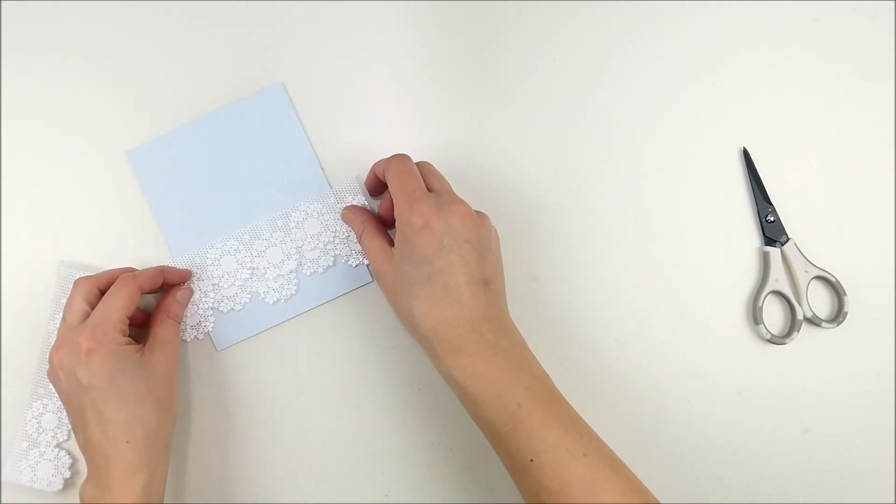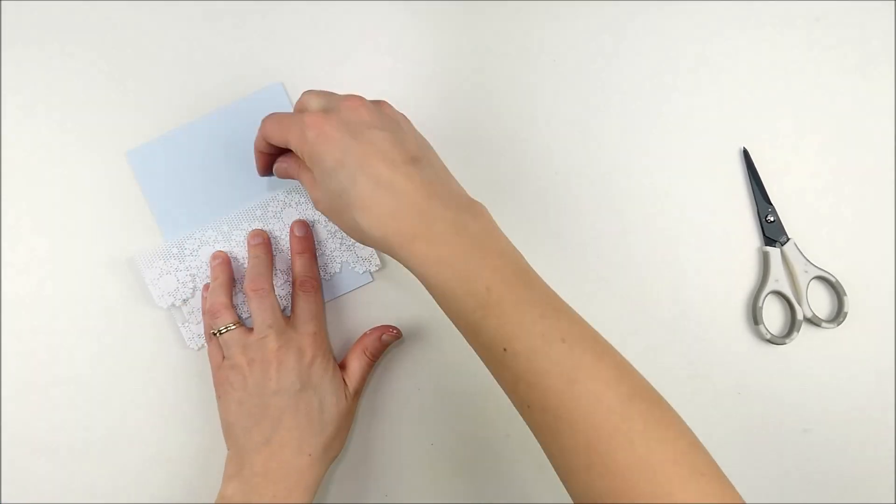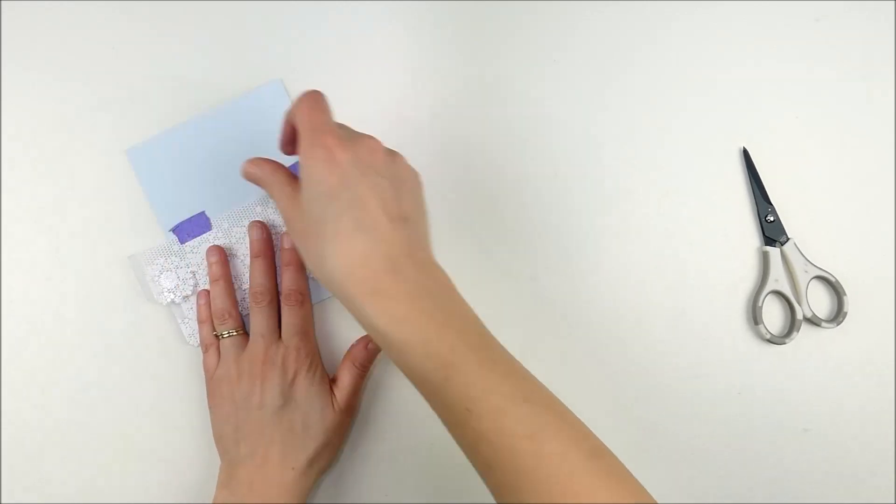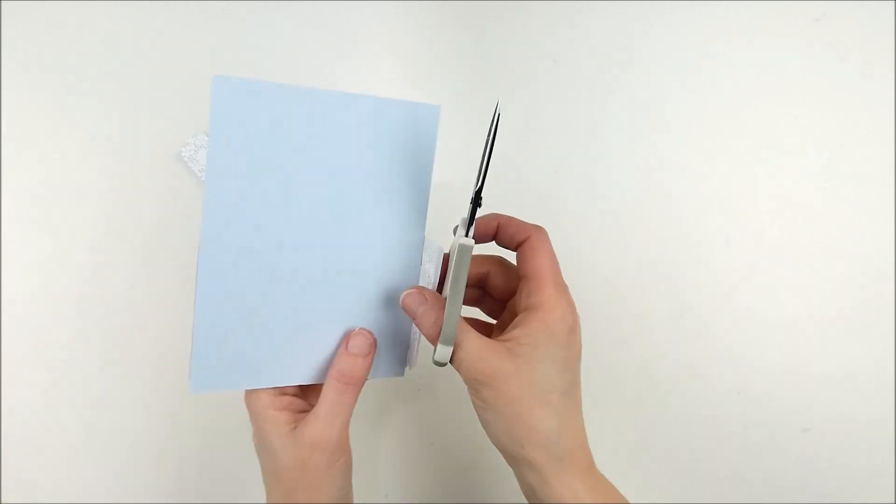Skipping ahead again, now I finished die cutting all three of those and I'm going to line them up, just overlapping at alternating spots. Once I was happy with the way they were laid out on my soft blue cardstock panel, I went ahead and used some washi tape or Post-it tape to hold them all in place so I could trim the excess off.